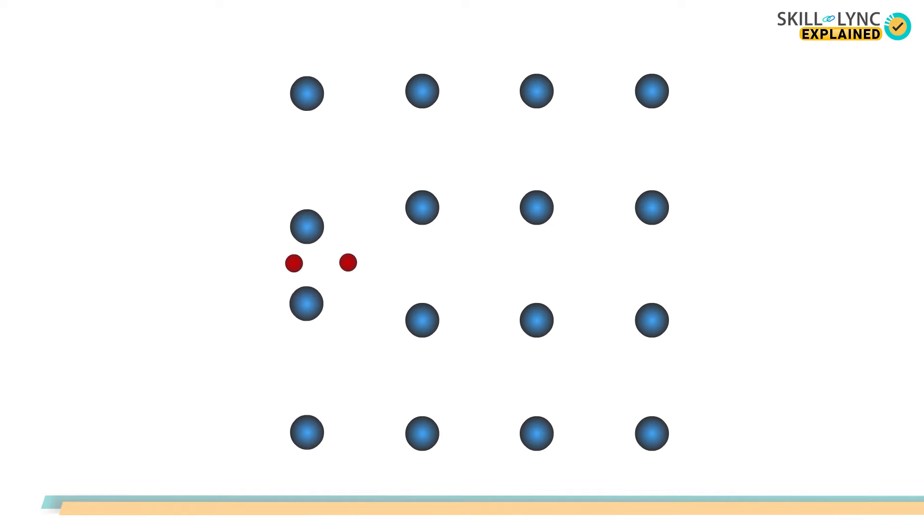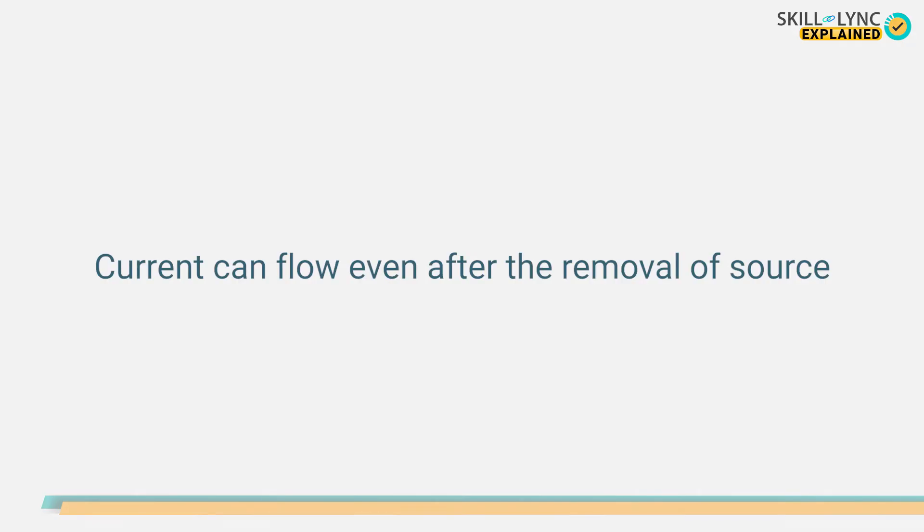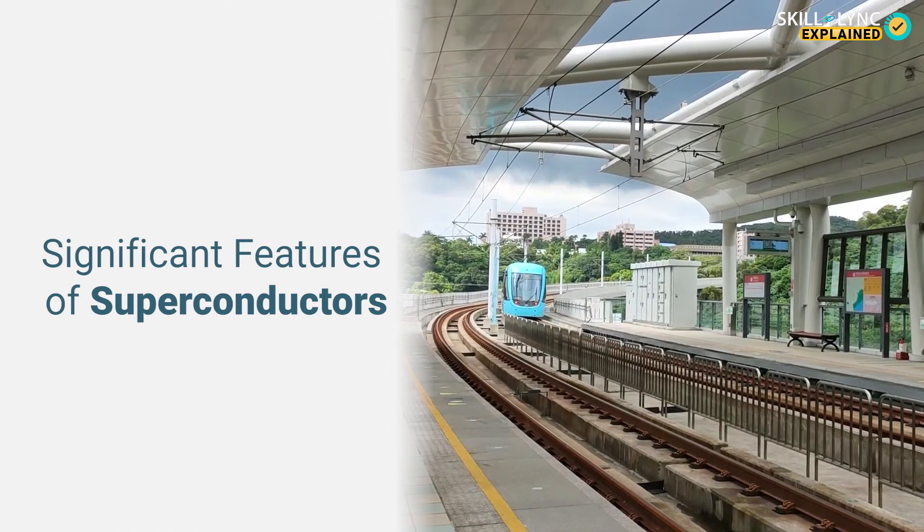The Cooper pair is bounded over a long distance and moves together towards the positive terminal. The number of Cooper pairs overlap each other and move together between the lattices without causing any disturbance, resulting in zero resistance. Because of the zero resistance, the current can flow in a superconductor loop even after the source is removed.